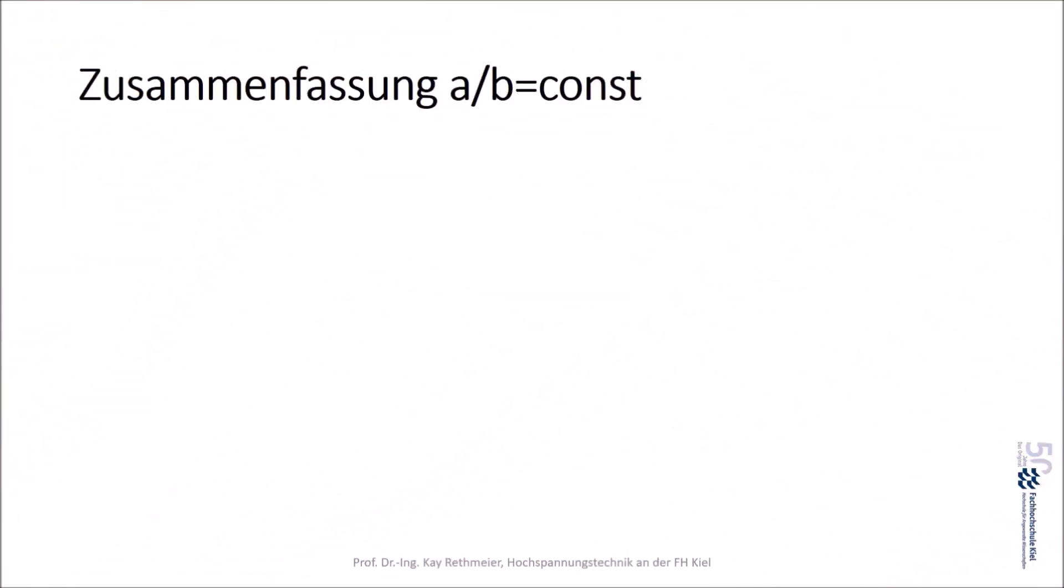In diesem Video ging es darum, wie man Strukturen zeichnet, die ein konstantes Seitenverhältnis a zu b aufweisen. Rechtecke und Quadrate haben ein konstantes Seitenverhältnis a zu b gleich konstant.